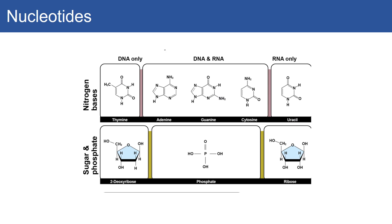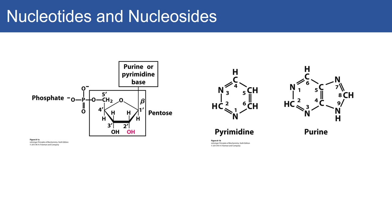Again, there is a phosphate, a ribose sugar, and a nitrogenous base. The nitrogenous base comes in two forms: a pyrimidine ring and a purine ring.